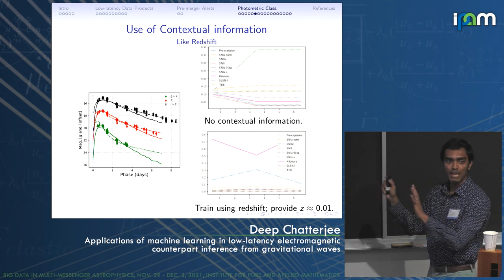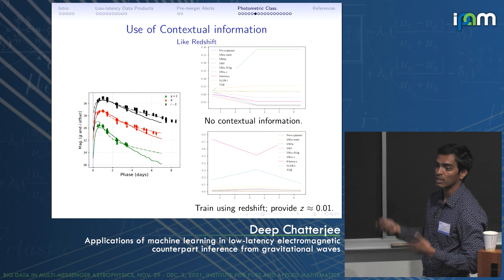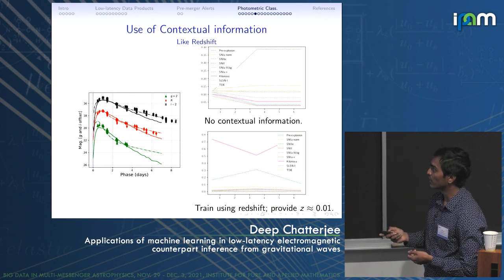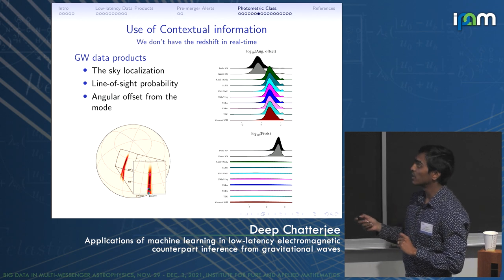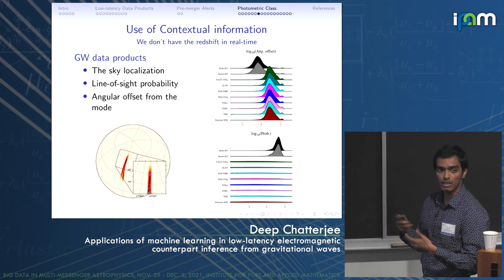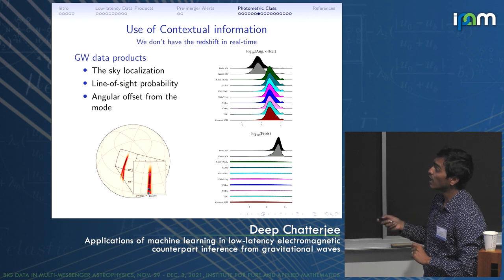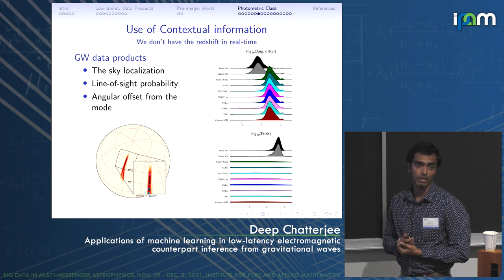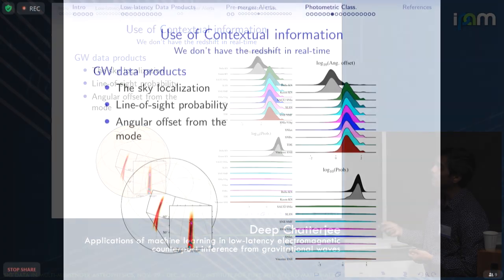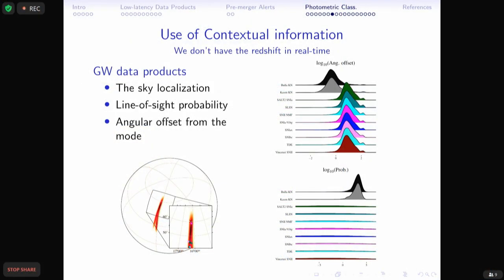We don't have the redshift in real time unfortunately. However, we do have other data products that can act as potential contextual information — for example, the sky localization and features of the sky localization, like the line-of-sight probability and the angular offset from the mode of the sky map. All of these sort of set the kilonova apart from the other objects and act like a prior to these different object types.